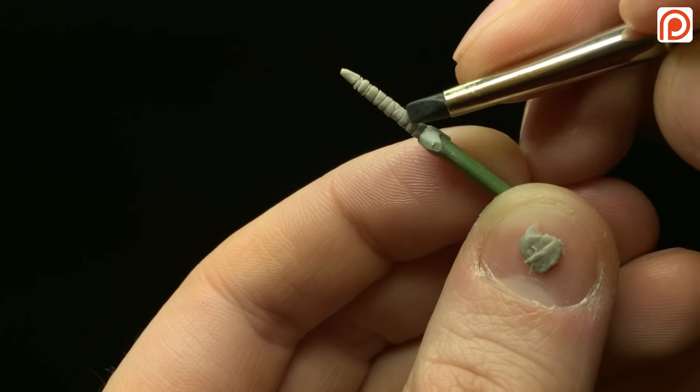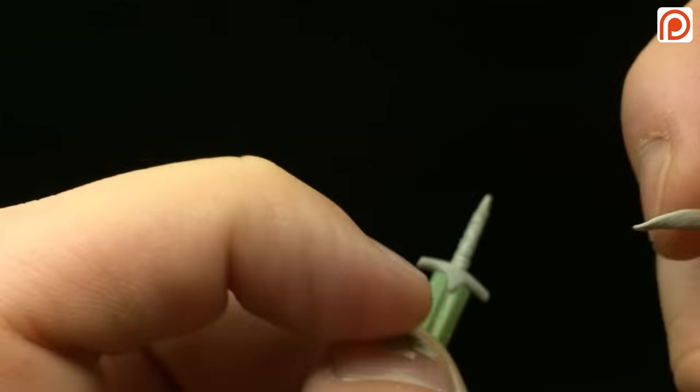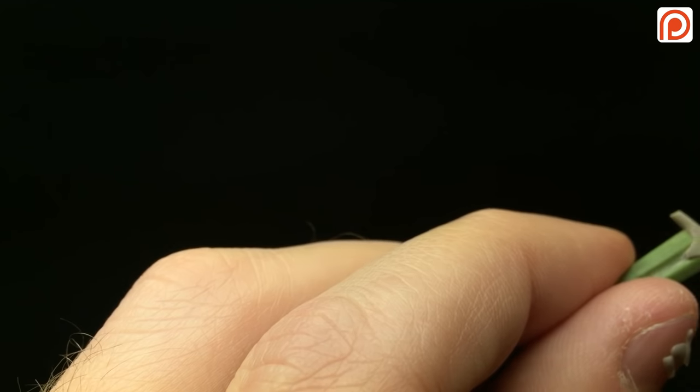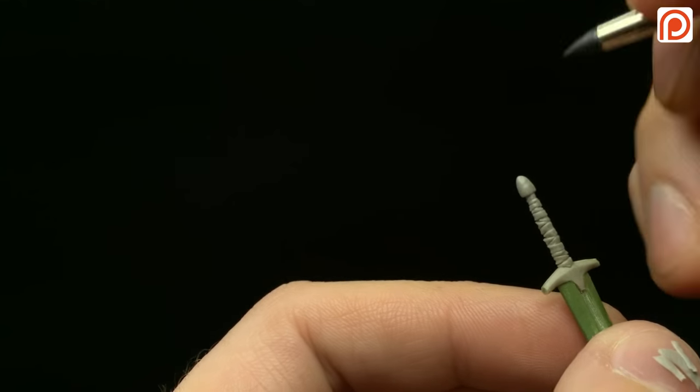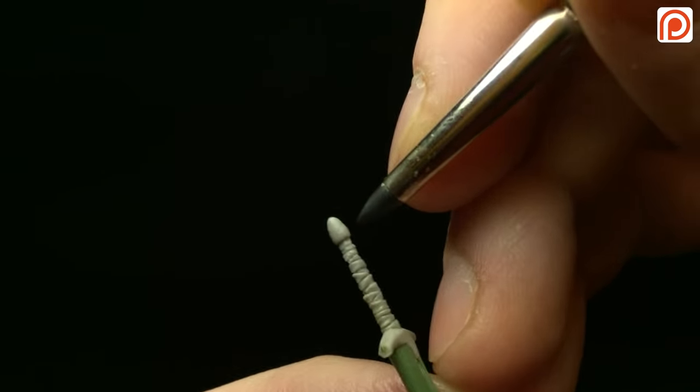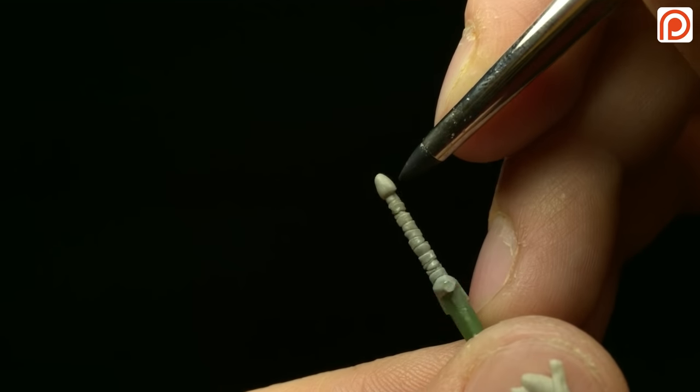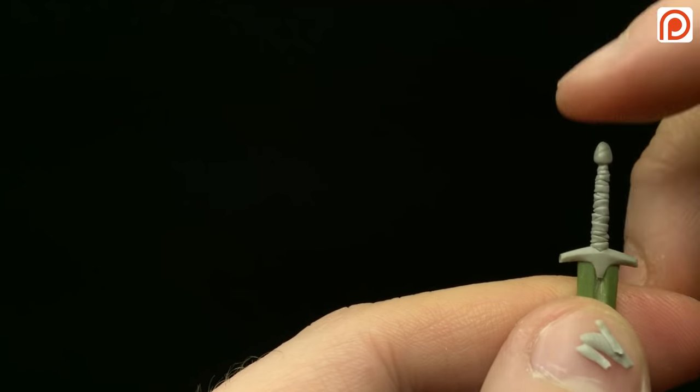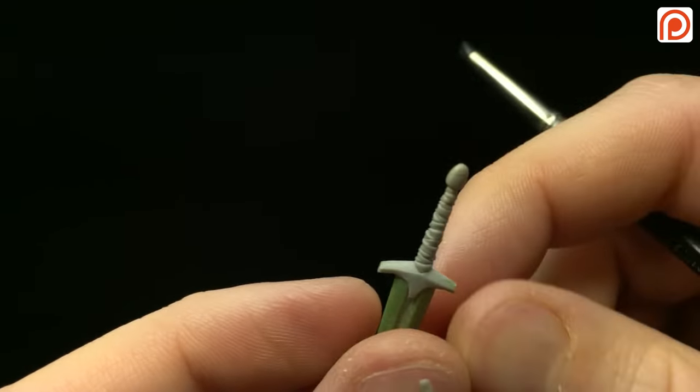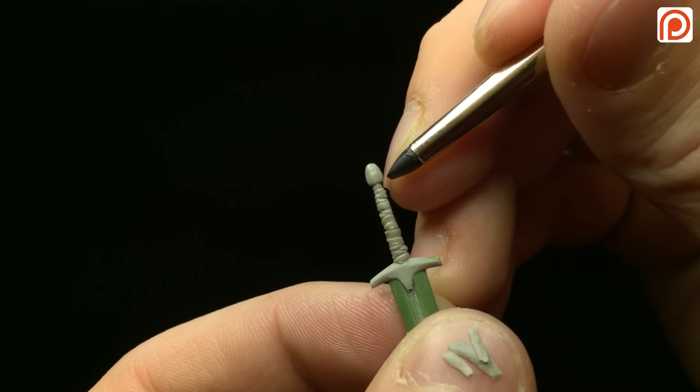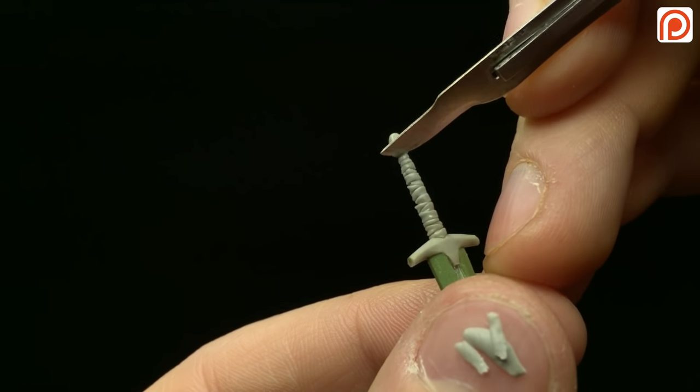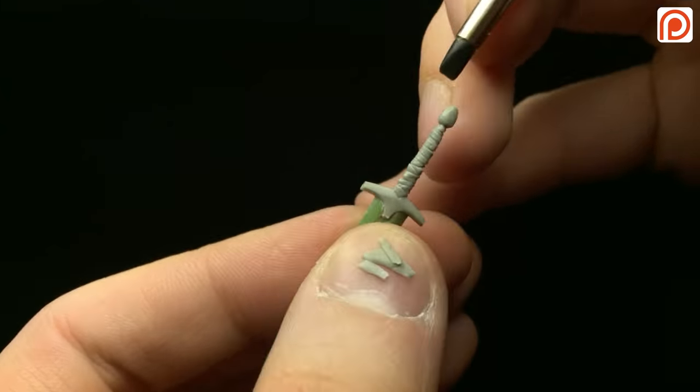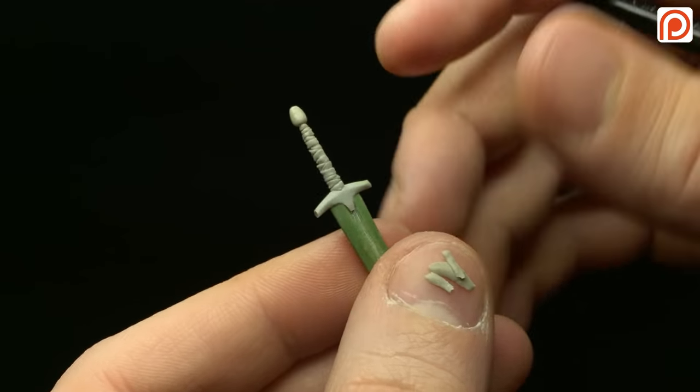The last little detail to add is the pommel. For that, just put a little bit of putty on the end of your sword hilt. You can do this while the hilt's still uncured, or you can let it cure and set up. Just put a little bit on there and get it into shape. I got it mostly into shape with my tools, but I wanted to have a few more crisp edges, so that's what's great about this mix. The 50-50 procreate or green stuff and Aves cures rock hard and it's super easy to file. I just took a file and straightened it out a bit.